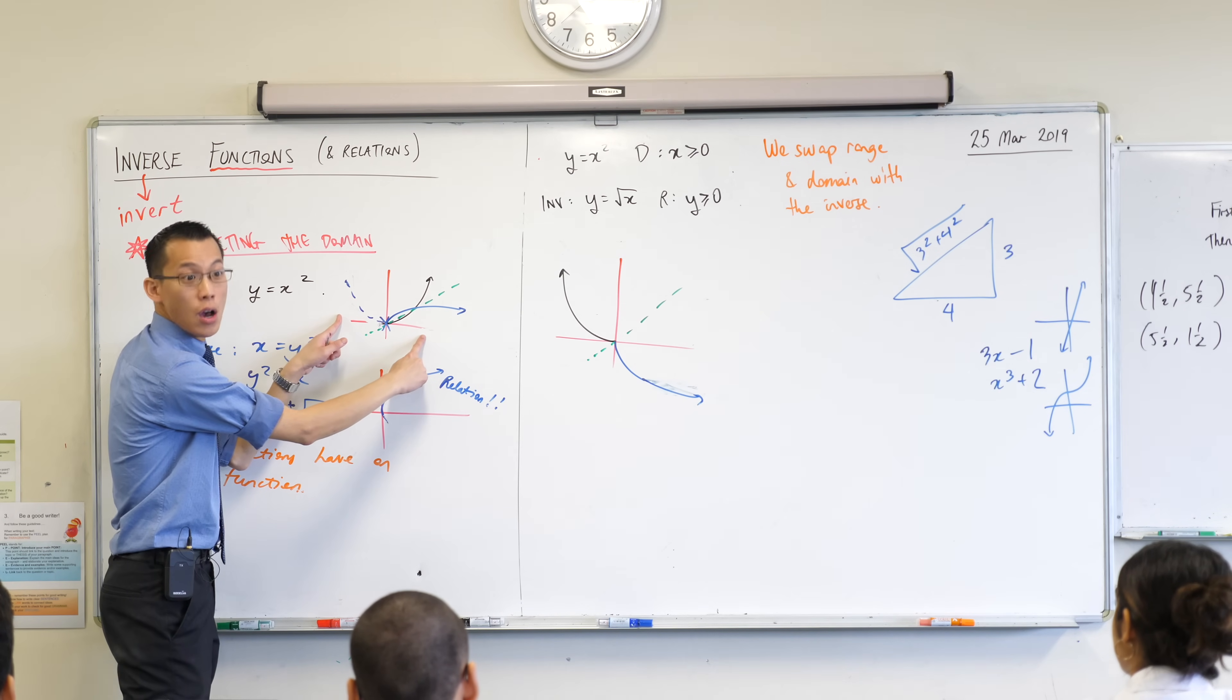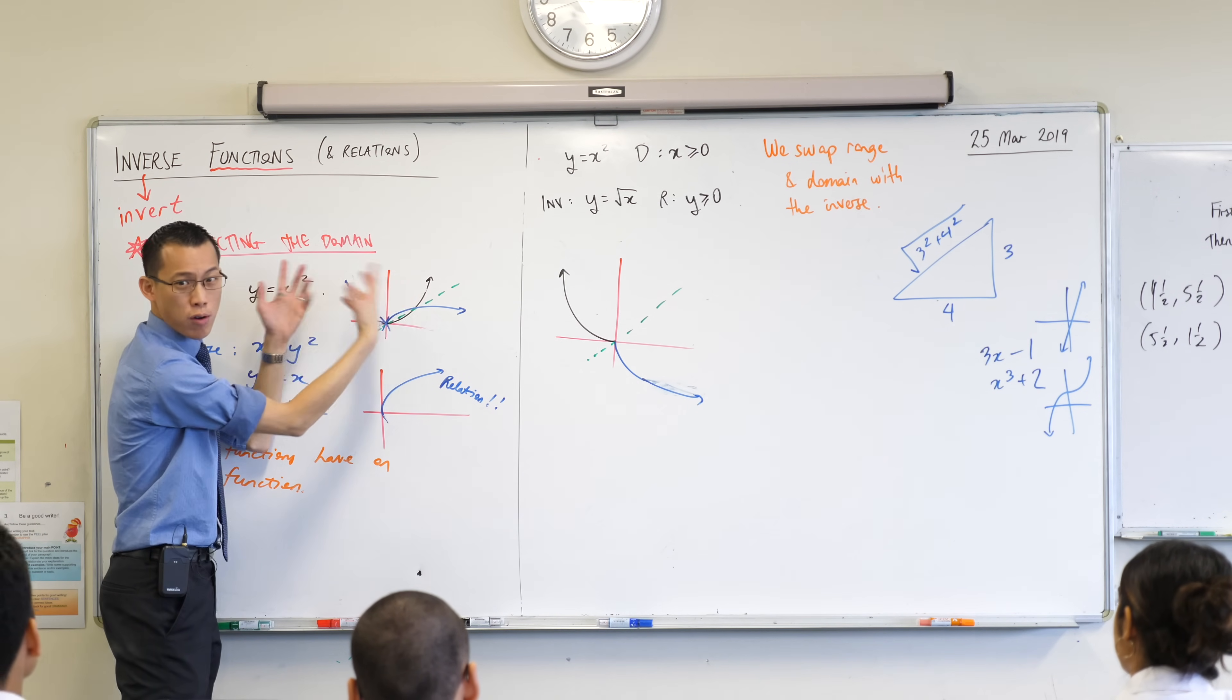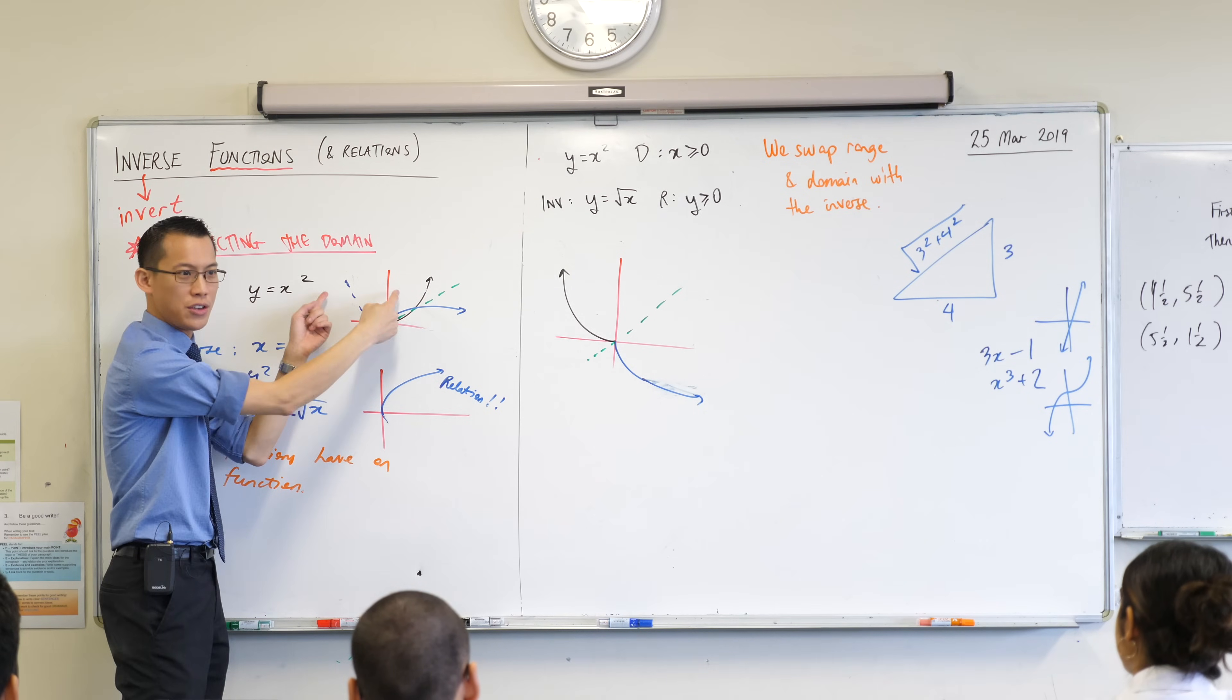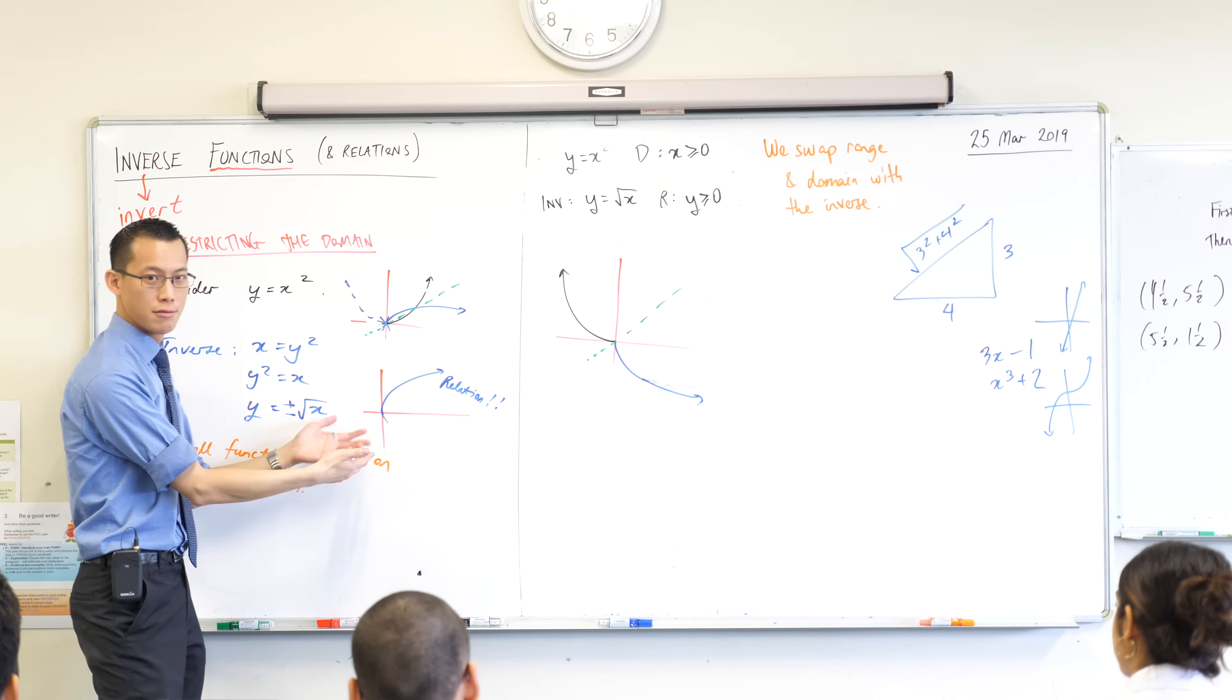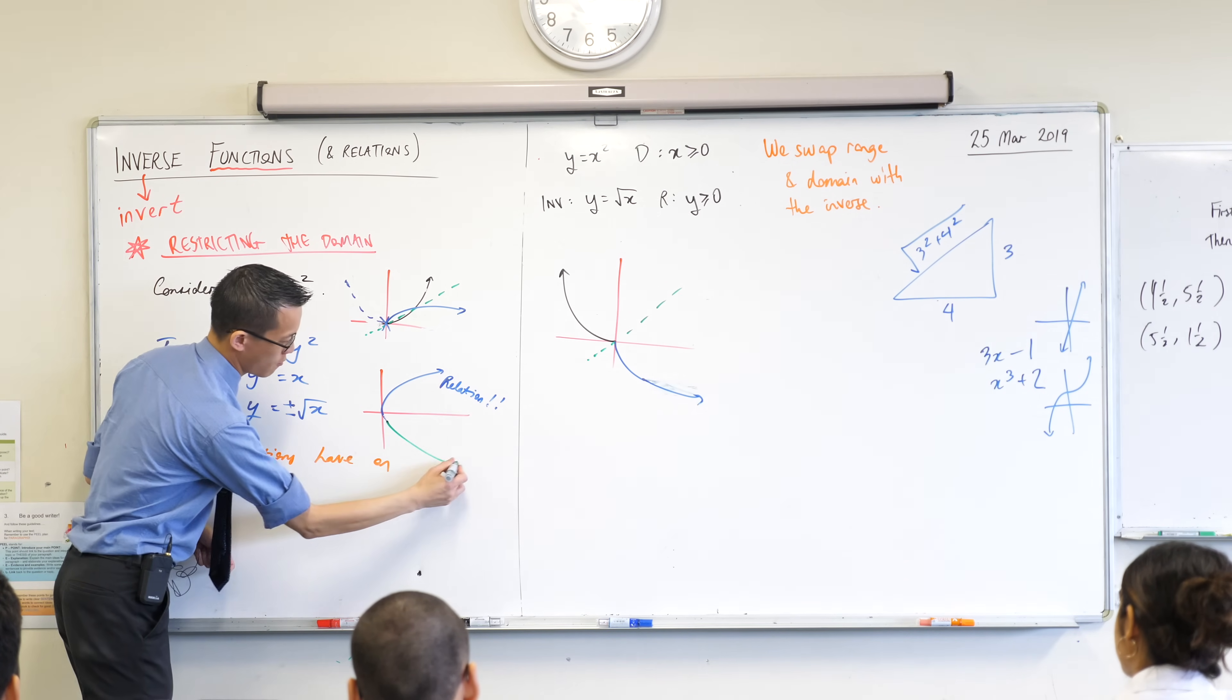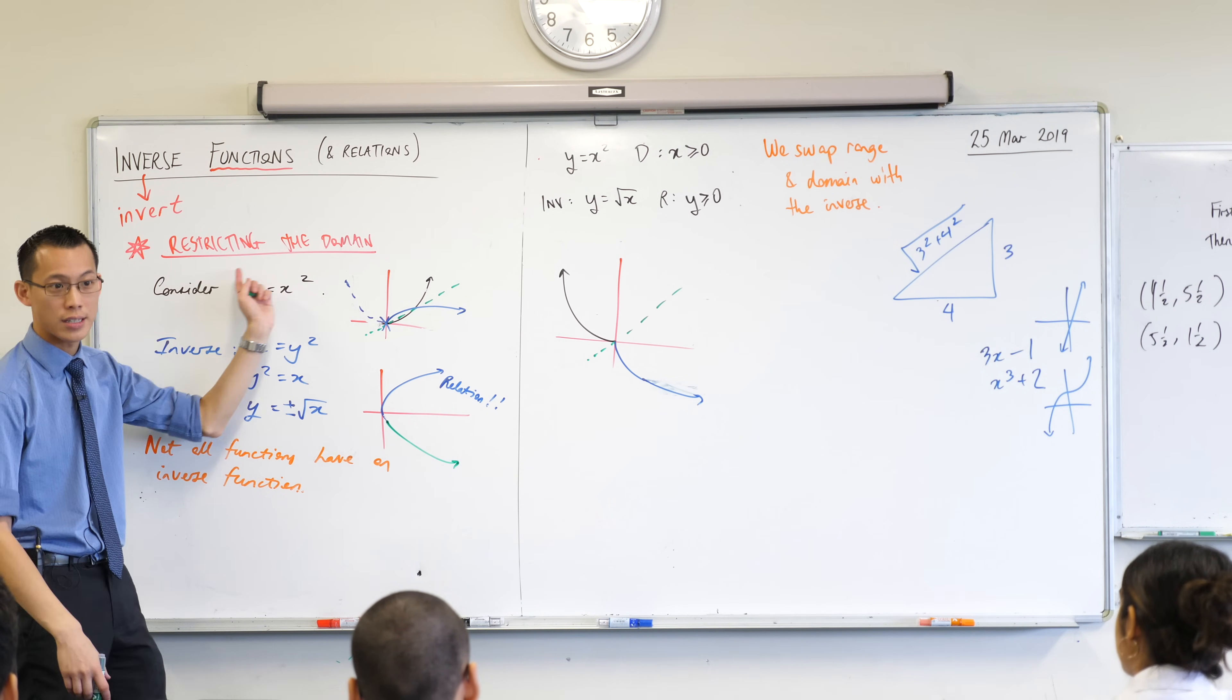Many different x values will give you the same y value. So the problem with having a many-to-one is that when you swap everything around, you're swapping the many and the one, you get a one-to-many, this guy, which is not a function anymore. So that's why we have to learn to restrict the domain.